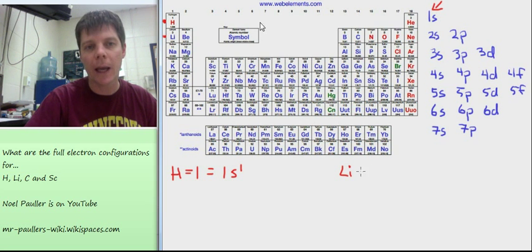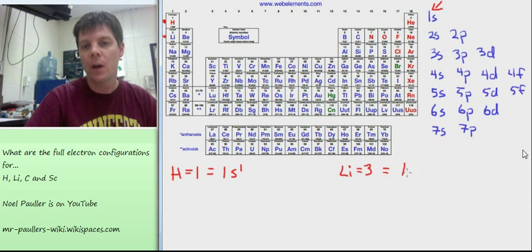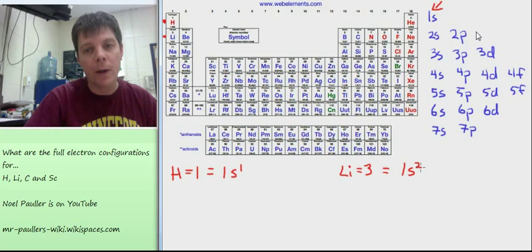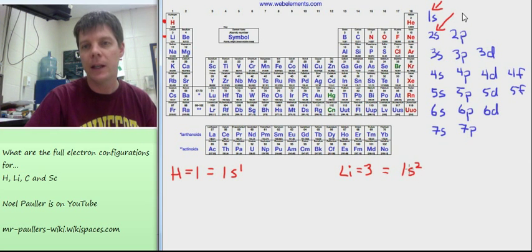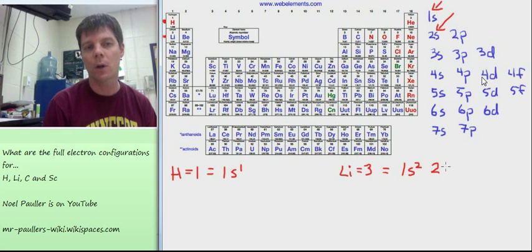Next, we'll look at lithium, which has an atomic number of three electrons. The first two electrons will go into the 1s sublevel. We'll write 1s2. And then the one additional electron will go into the second energy level in the 2s. So 1s2, 2s1 is the full electron configuration for lithium.